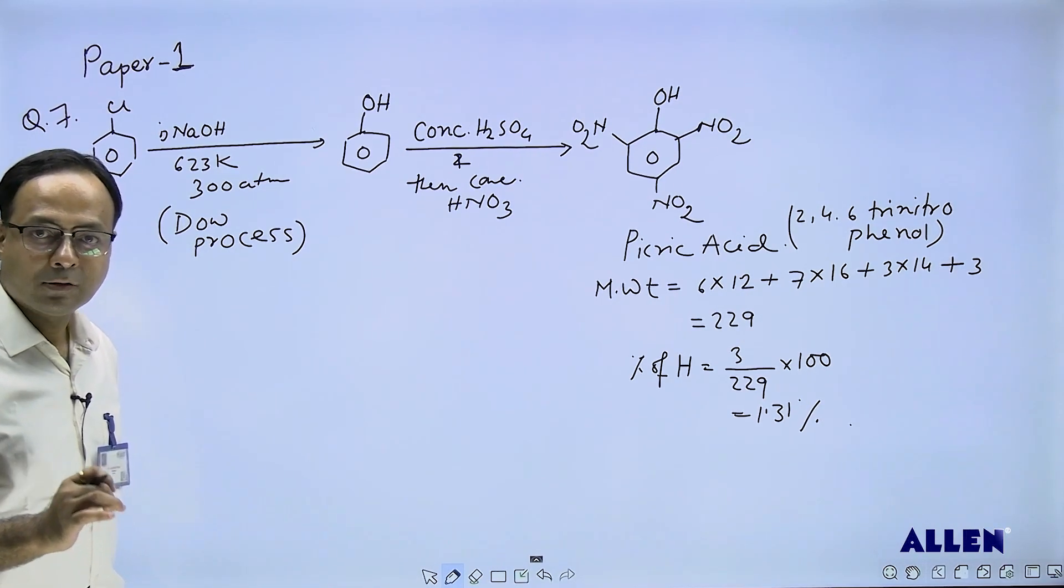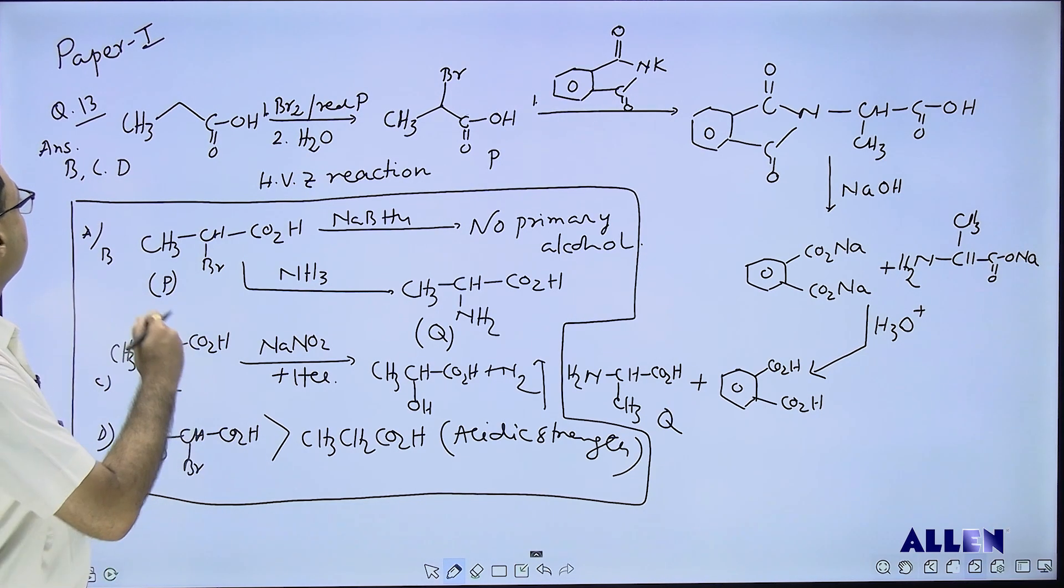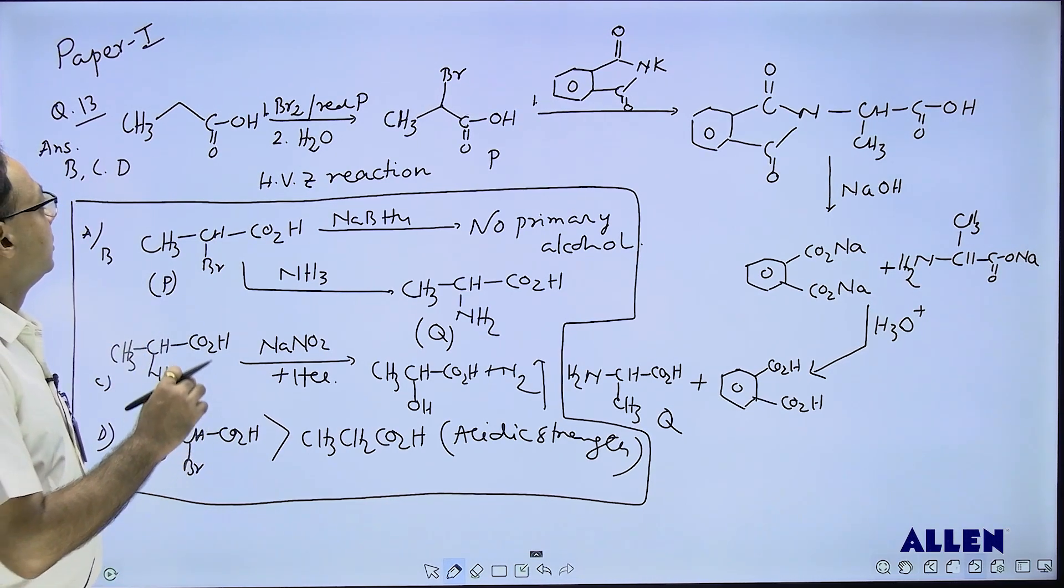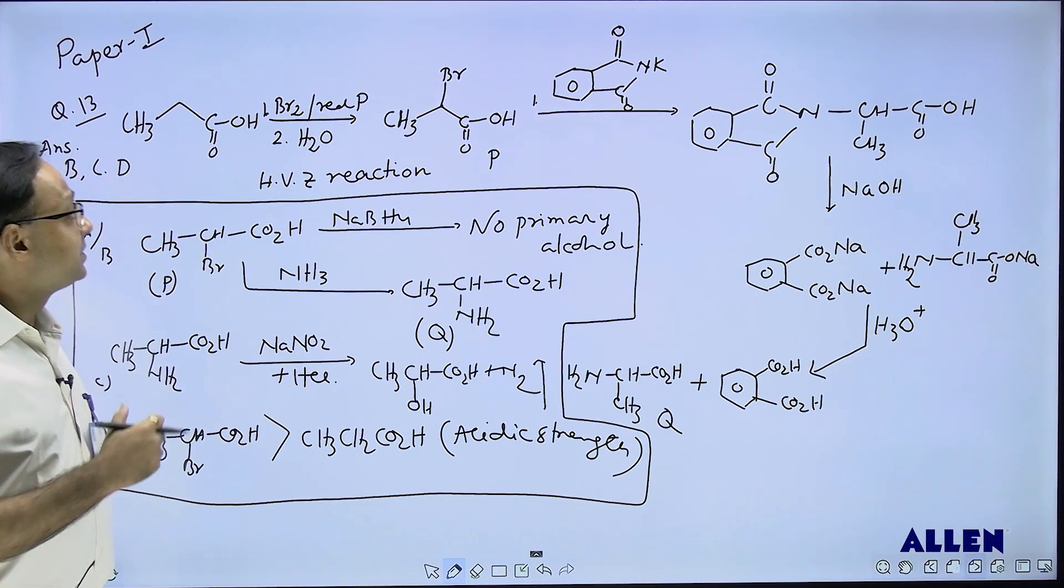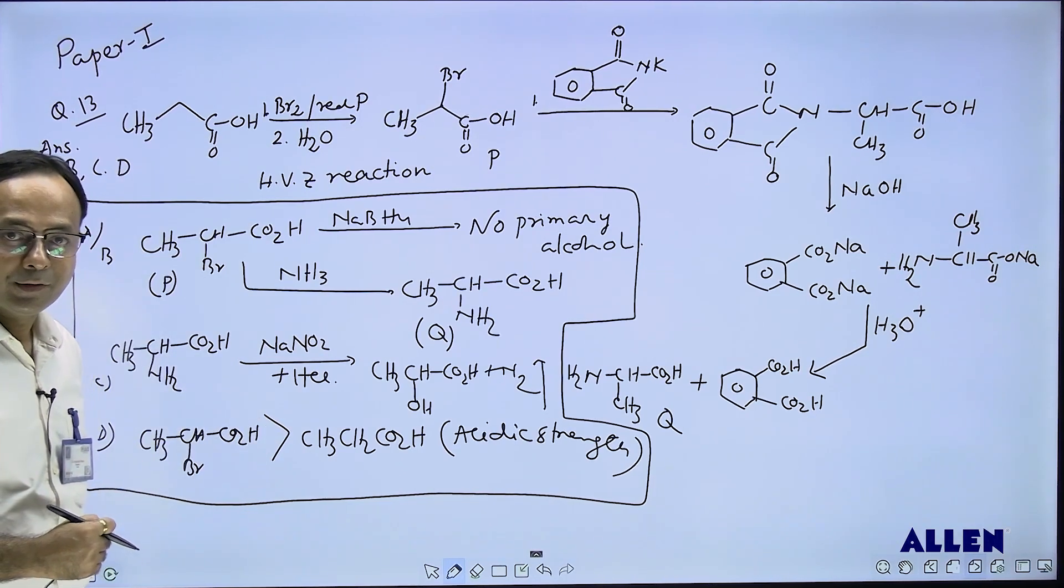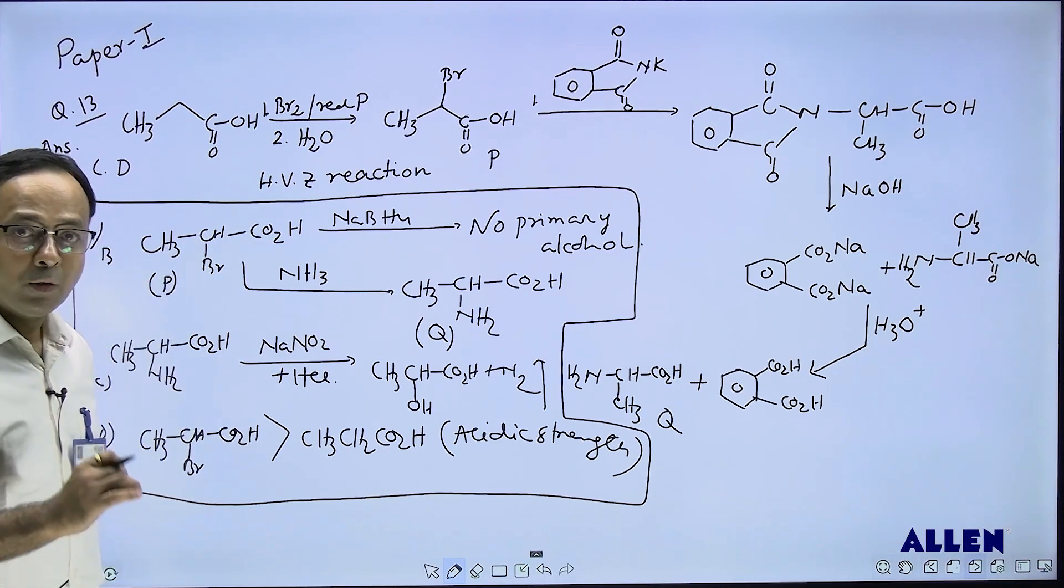Paper one, question number 13. The first step: one carboxylic acid, propanoic acid, is treated with bromine in presence of red phosphorus. We know this is called the HVZ reaction. The product is alpha bromo acid which is P.